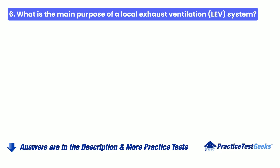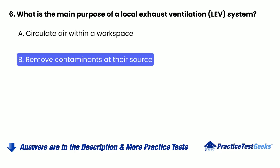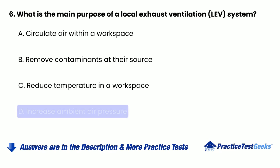Question 6: What is the main purpose of a local exhaust ventilation (LEV) system? A. Circulate air within a workspace. B. Remove contaminants at their source. C. Reduce temperature in a workspace. D. Increase ambient air pressure.